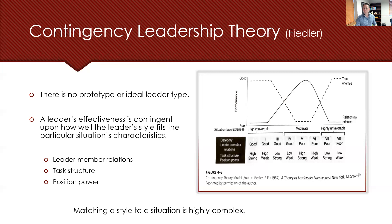When leader-member relations are good, the task structure is clear, and position power is strong, the situation is defined as favorable, as you see on the left-hand side of the figure. In contrast, situations are the least favorable when leader-member relations are poor, task structure is low, and position power is weak, meaning leaders can't hire, can't fire, can't adjust — they don't have that control.